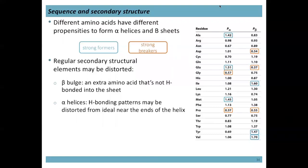Different amino acids have different propensities to be found in alpha helices or beta sheets. High propensity values indicate strong helix formers. Glycine and proline are strong alpha-helix breakers — they put a kink in the strand and cause turns. Similarly, there are residues that are strong beta-sheet breakers and those that preferentially form beta sheets.